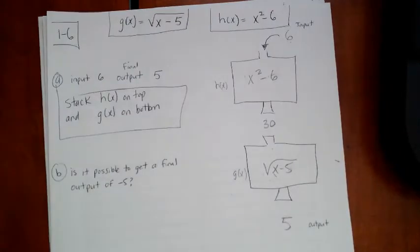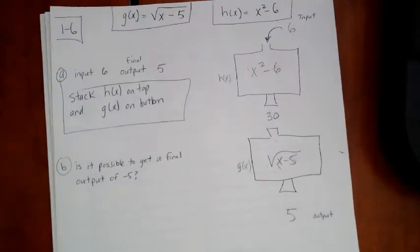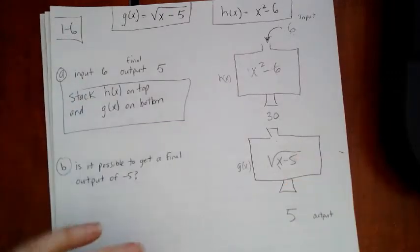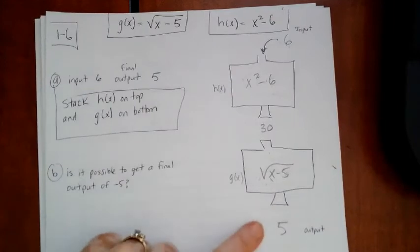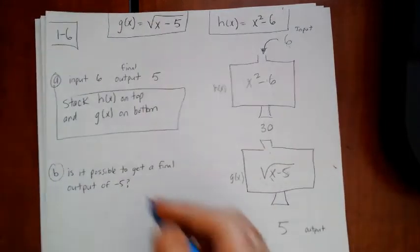The second question is, is it possible to get a final output of negative 5? Well, we already know that because remember the first time we tried, we put g of x on top and h of x on bottom. And remember it was a negative 5. So we're just going to say yes.